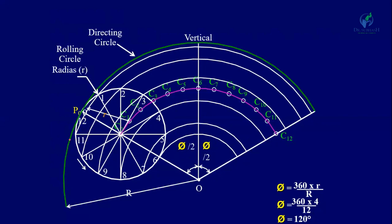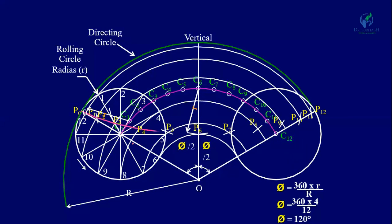Divide the rolling circle into 12 equal divisions and label the centers C0 through C12. With O as center, draw arcs through points 1 and 11, 2 and 10, 3 and 9, 8 and 4, 7 and 5, and finally 6. With C1 as center and radius equal to the rolling circle radius, find point P1. Similarly, find P2 with C2, P3 with C3, and continue through C12 to find all points P4 through P12. Join all these points by a smooth curve — this is the hypocycloid.